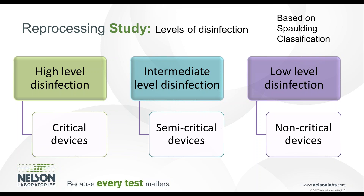An example of that would be a blood glucose meter — it's non-patient contacting, but you need intermediate level disinfection because of exposure to blood. A low level disinfection example would be non-patient contacting, non-critical devices such as IV monitors, bed rails, non-porous surfaces — things that wouldn't contact the patient and are non-critical.